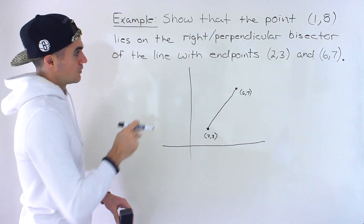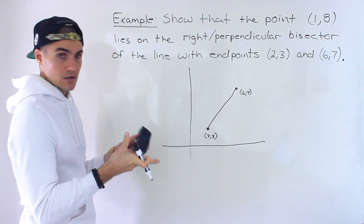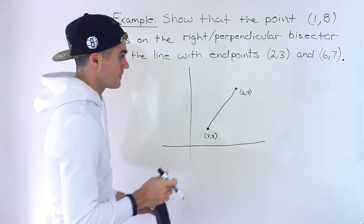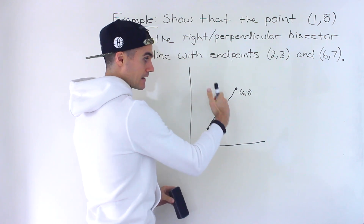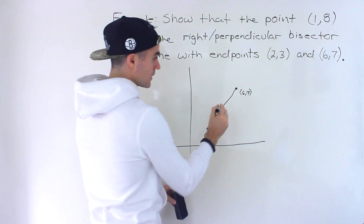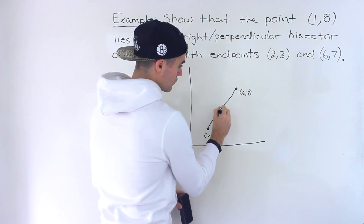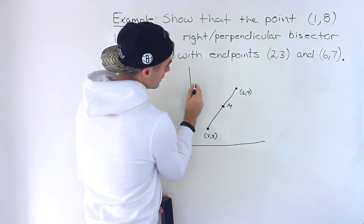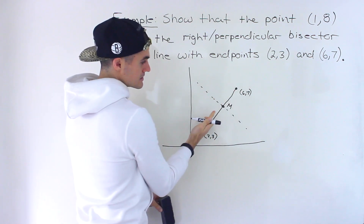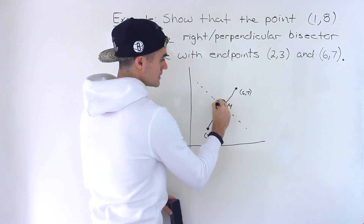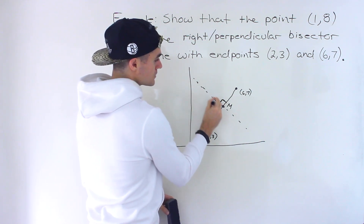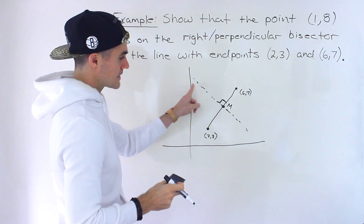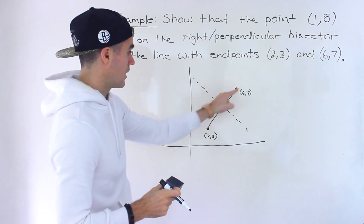We're going to be working with the right or perpendicular bisector of this line. As a review, what is a right bisector? It's a line that bisects this line — that cuts it in half — and is perpendicular to it. So if it cuts it in half, it's going through the midpoint, let's call this point M, and the angle between these two lines is going to be 90 degrees.